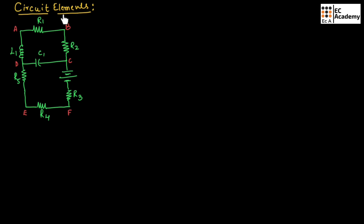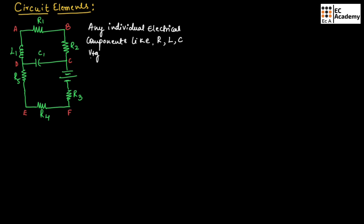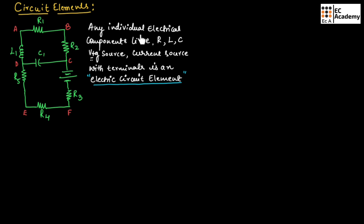To understand circuit elements, let us consider an electrical circuit. Any individual electrical component like resistor, inductor, capacitor, voltage source, or current source with terminals is an electric circuit element. So any electrical component with terminals is known as an electric circuit element.